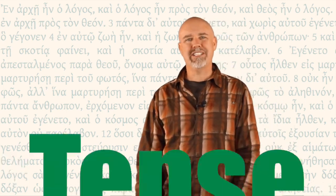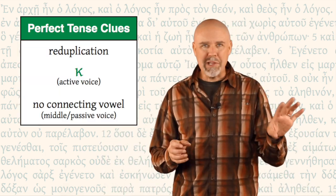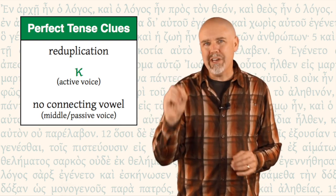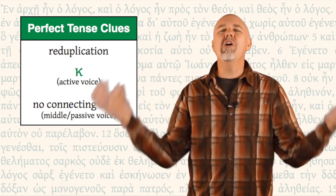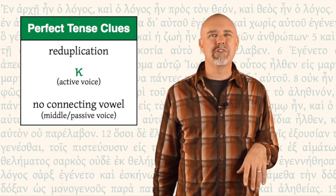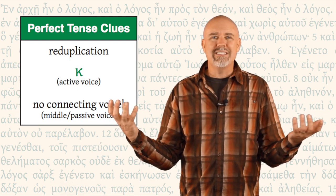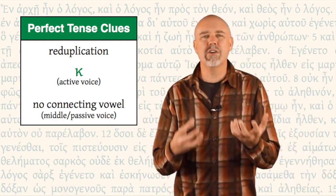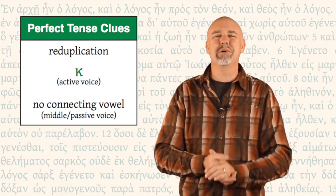We're just trying to find a way to see these patterns. The patterns we've learned in the indicative apply in the subjunctive, the imperative, the infinitive, and now the participle. So let's keep our perspective. The perfect participle: tense, voice, case, number, and gender — that's always what we're after. How do I recognize a perfect tense? Same clues: reduplication on the front, kappa for the active voice, and no connecting vowel for the middle-passive.